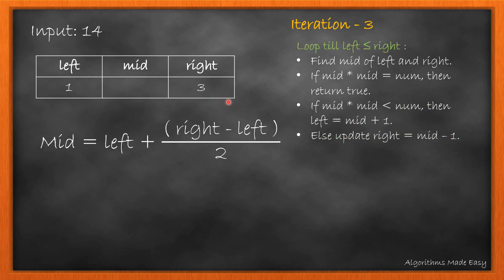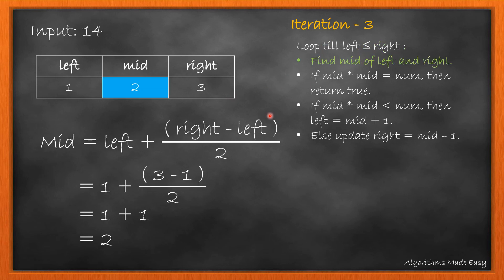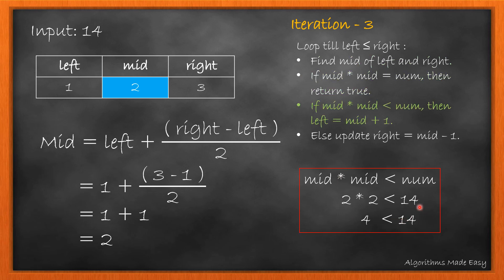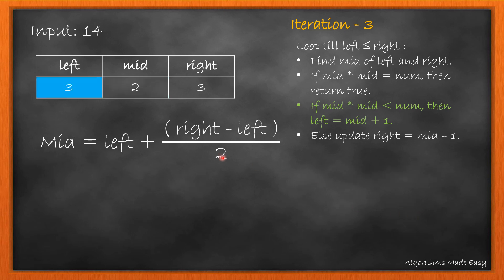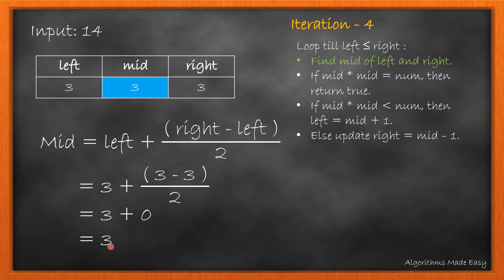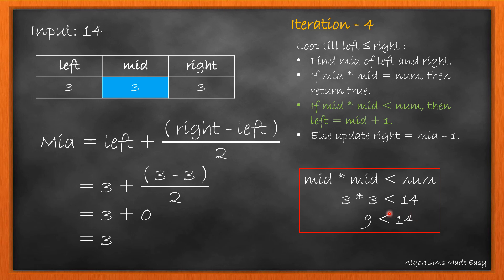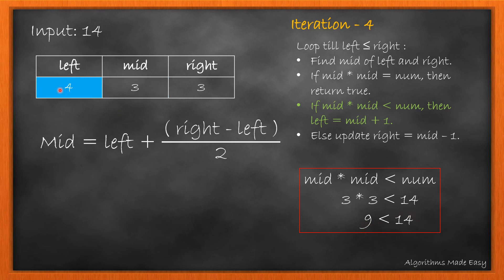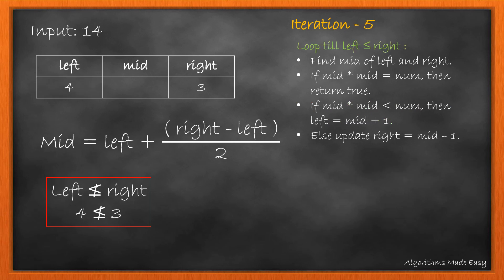Again, we will check the looping condition and move ahead. We will calculate the mid. We will check if its square is equal to num, then check if the square is less than num. As 4 is less than 14, we will update left to mid plus 1. Since the looping condition is satisfied, we move ahead and find mid. As the square of mid is not equal to num, we check if it is less than num. As it is true, we update left with mid plus 1, that is 4. As the looping condition fails, we will return false.